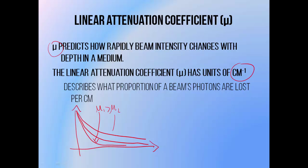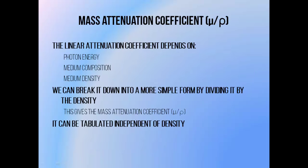The higher the linear attenuation coefficient, the more quickly the beam is absorbed as it travels through something. The mass attenuation coefficient is basically the linear attenuation coefficient divided by the density of the material. The linear attenuation coefficient depends on the photon energy, the medium composition, and the medium density. By dividing by the density, it no longer depends on density, which makes it simpler to handle, tabulate, and use for calculations. This tends to be the form found in physics data books.